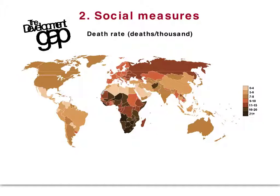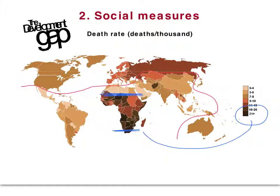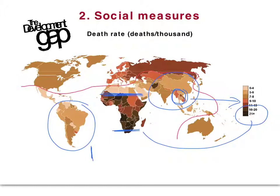Death rate is the deaths per thousand of the population per year. Looking at the pattern, Sub-Saharan Africa has all of the highest death rate values. South America and Asia are reasonably similar, with some Asian countries having a slightly higher value. So perhaps Asia just about first, South America second, and Sub-Saharan Africa clearly in third — that pattern remains very clear.